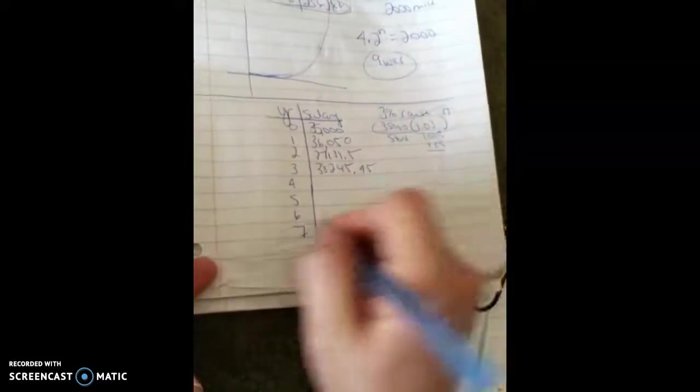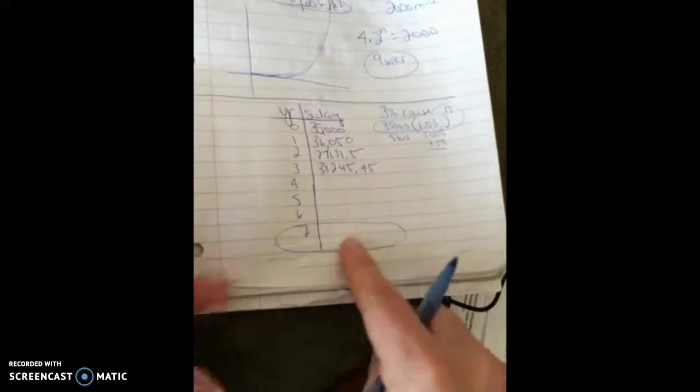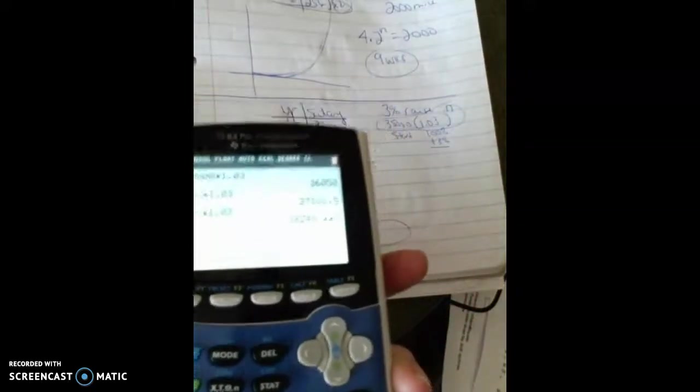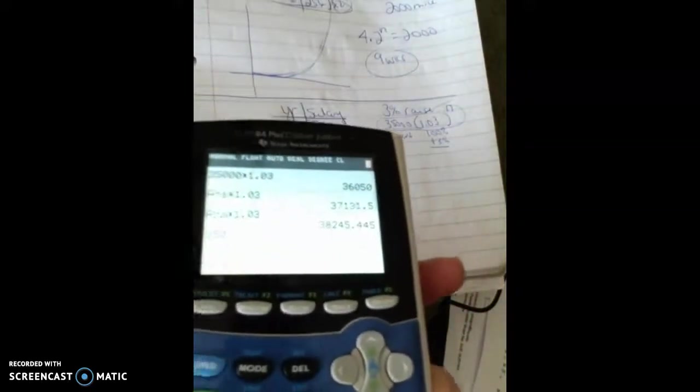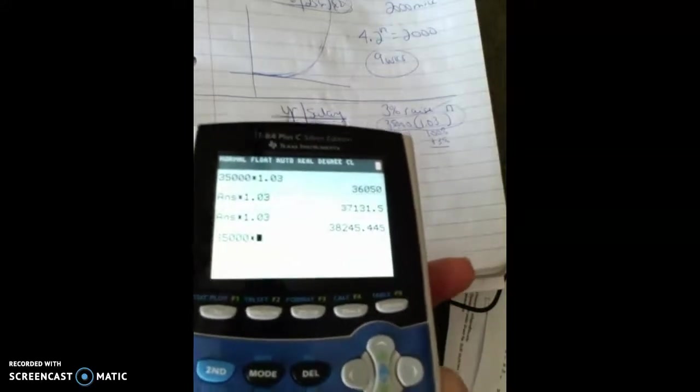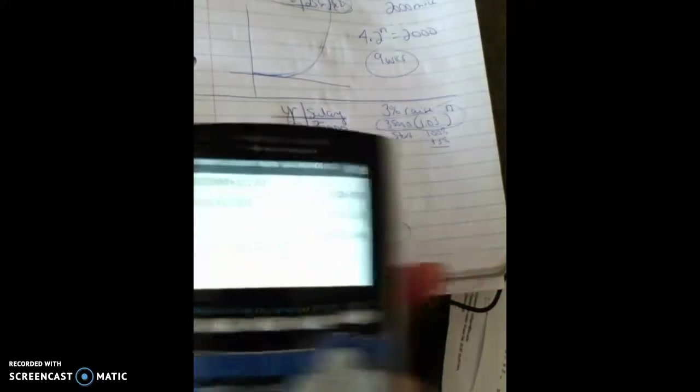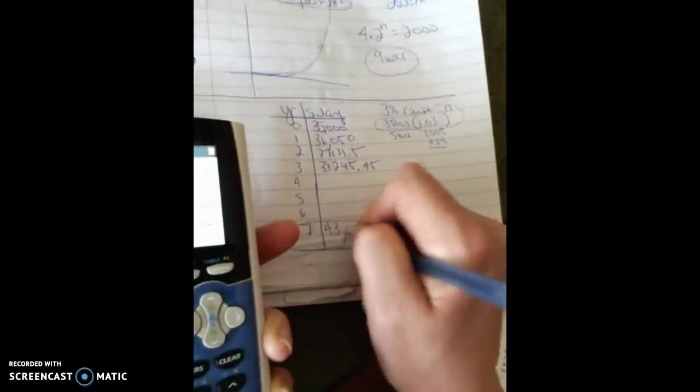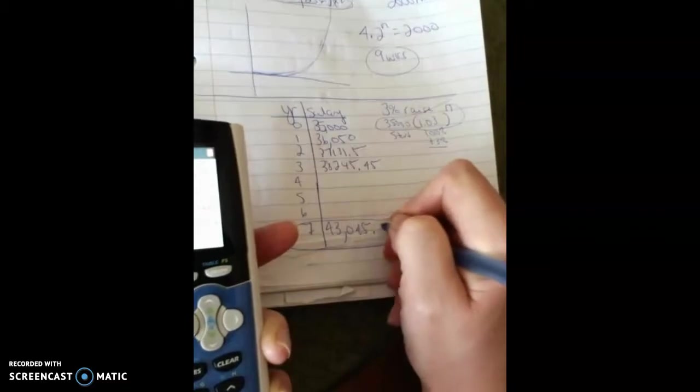Again, I could say, well, what am I going to make at year seven? Well, instead of filling out the chart, I could just use my formula, which is $35,000 times 1.03 raised to the seventh year. And it looks like I would make at that time $43,045 and $0.59.